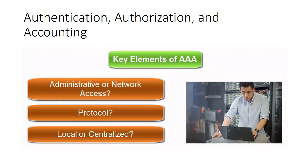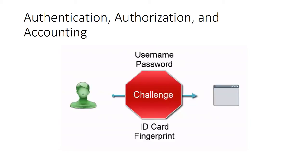There are a few key elements of AAA we will discuss today, including what type of access will be gained — administrative or network access — what protocol will be involved, and if the AAA server will be local or centralized. When a user or admin attempts to log in, there must be a way to identify the user. This identifying factor can be as simple as a username and password, an ID card, or even a fingerprint. Often this can be two-factor authentication, such as a token generated from an app that provides a one-time password to gain access to the system.